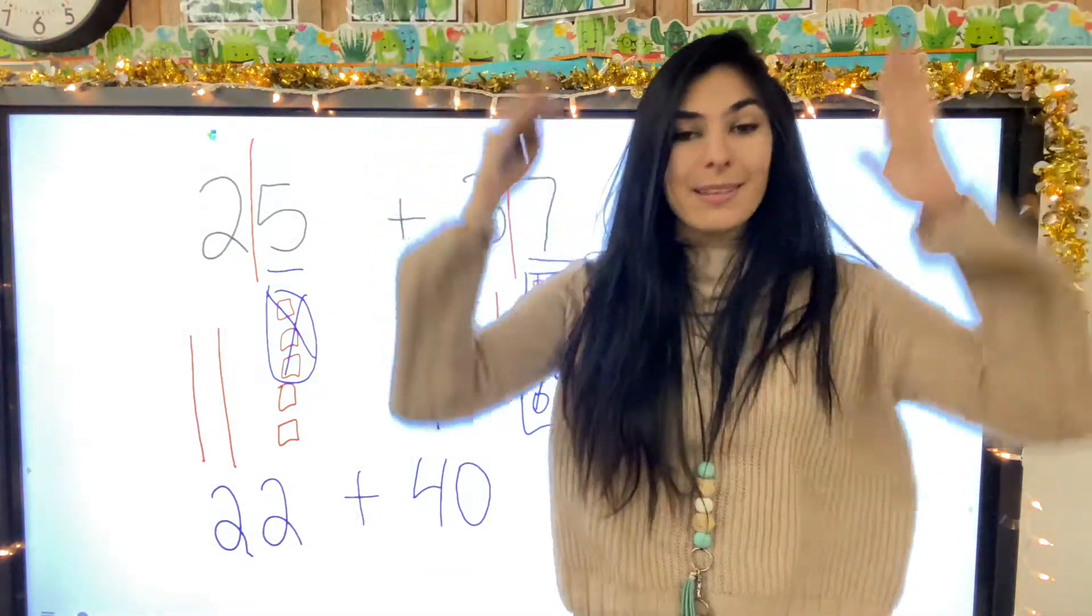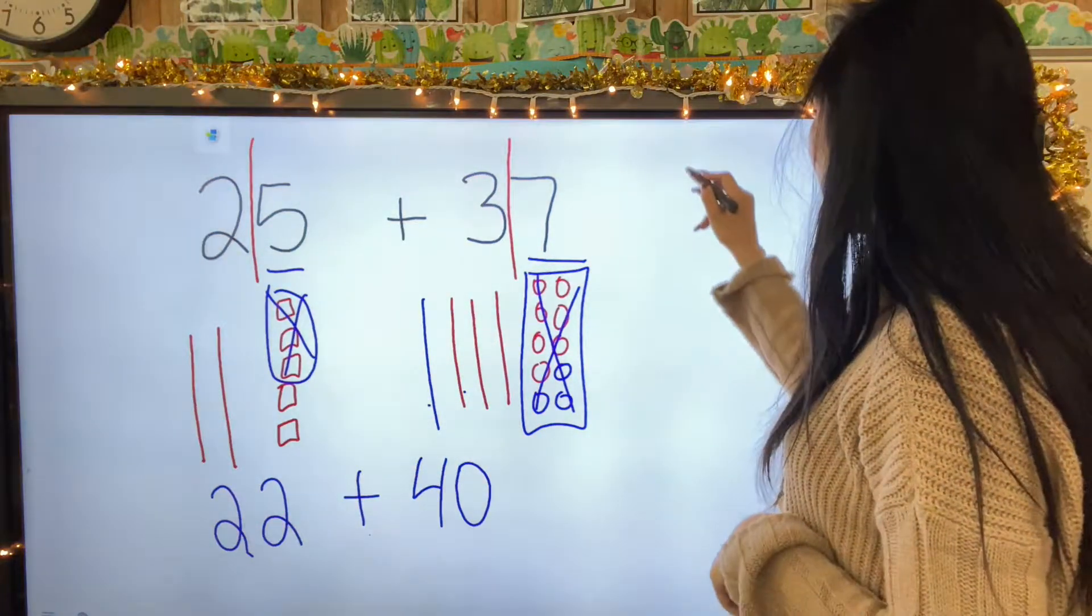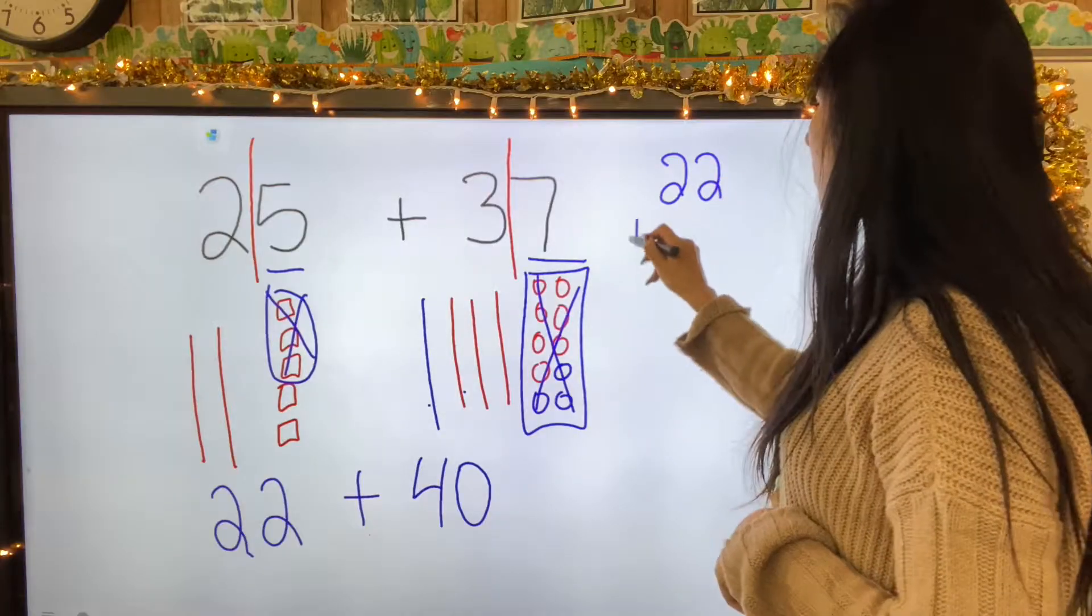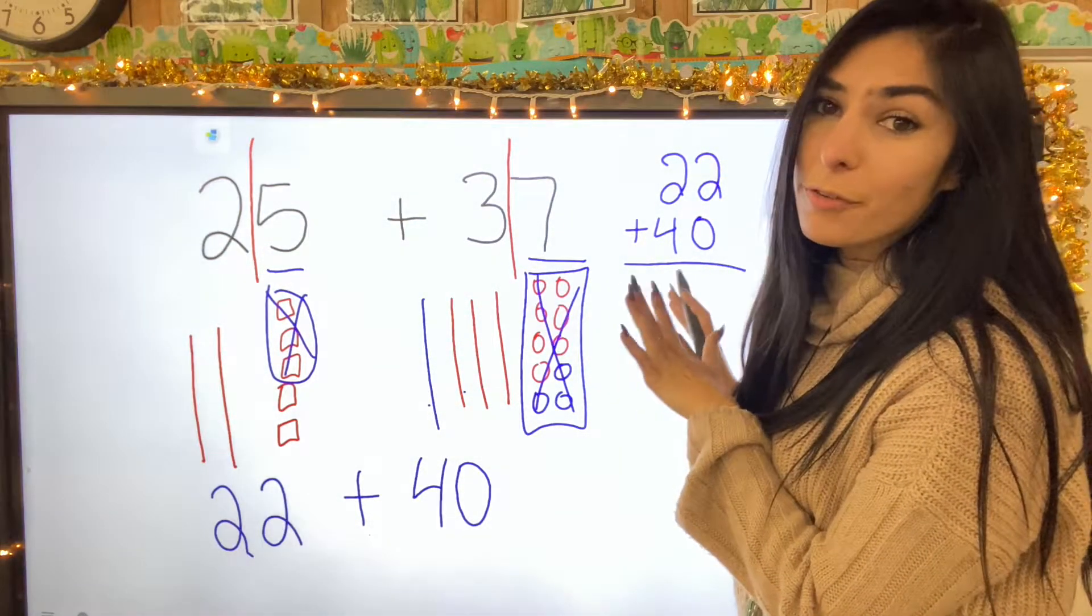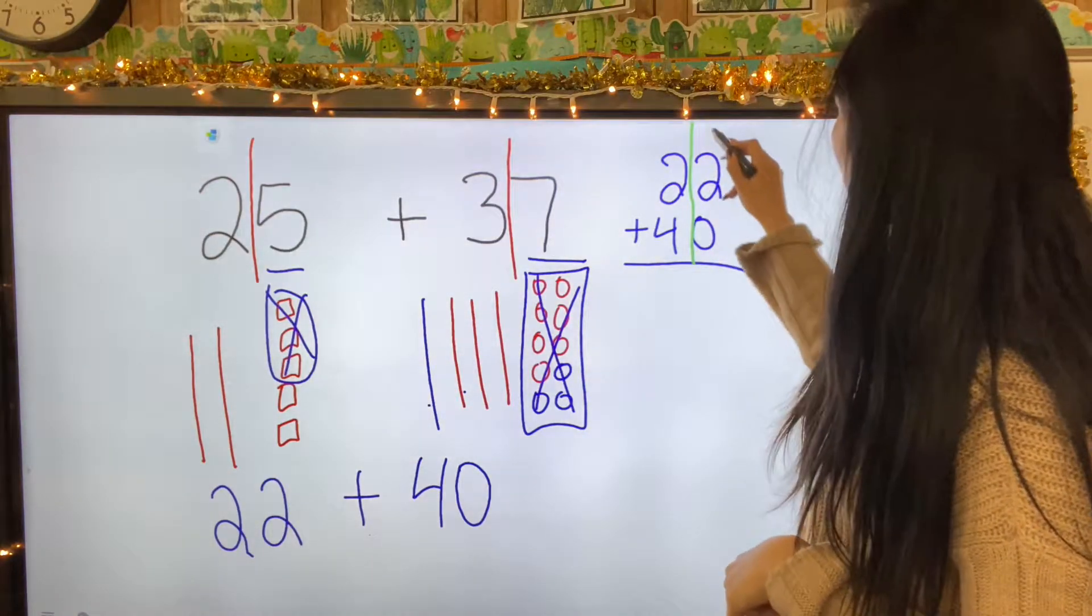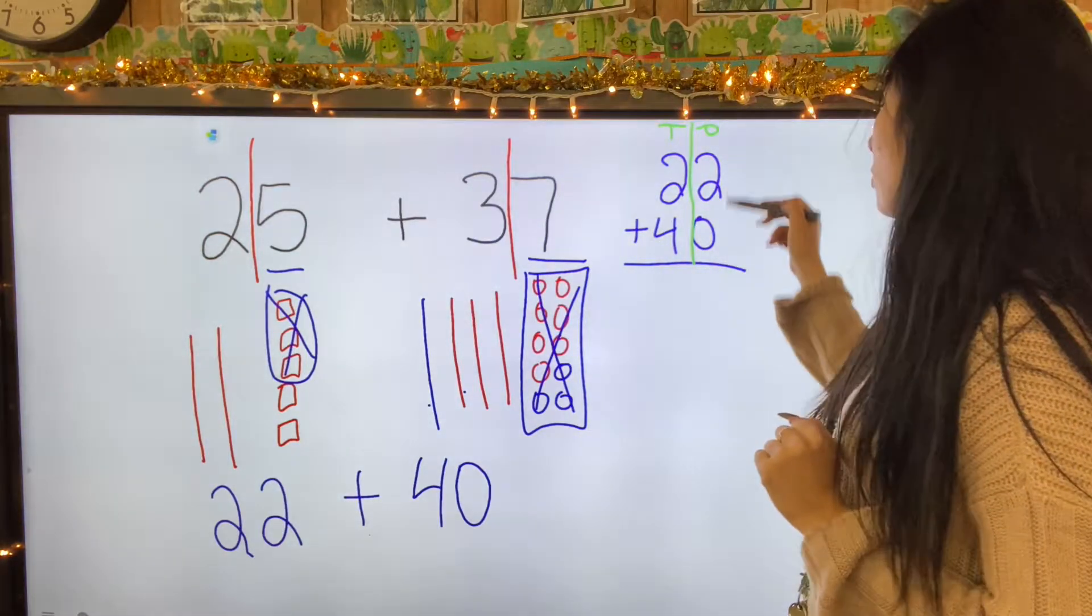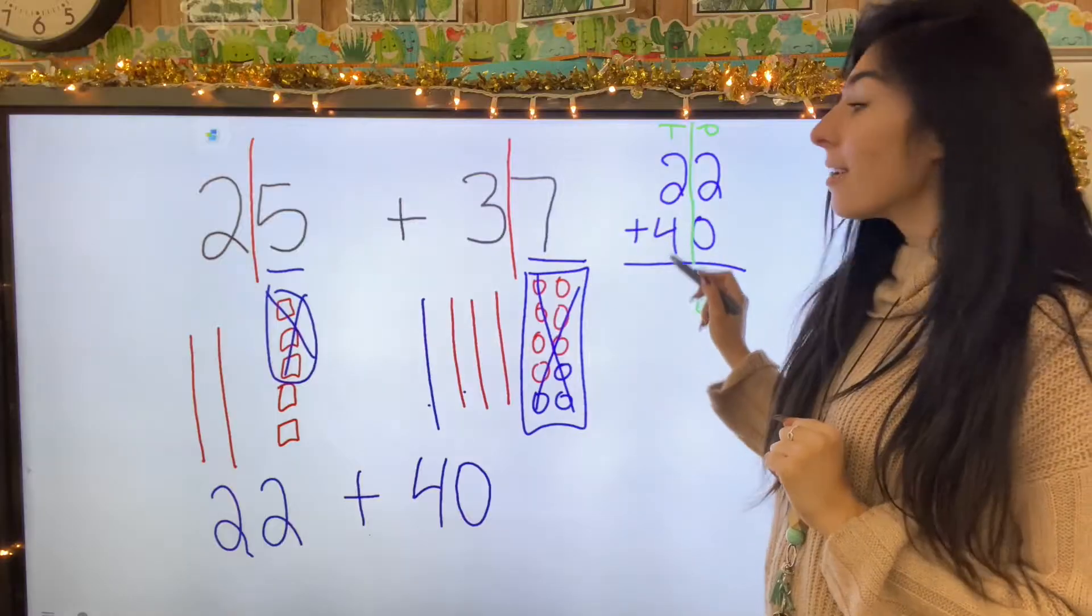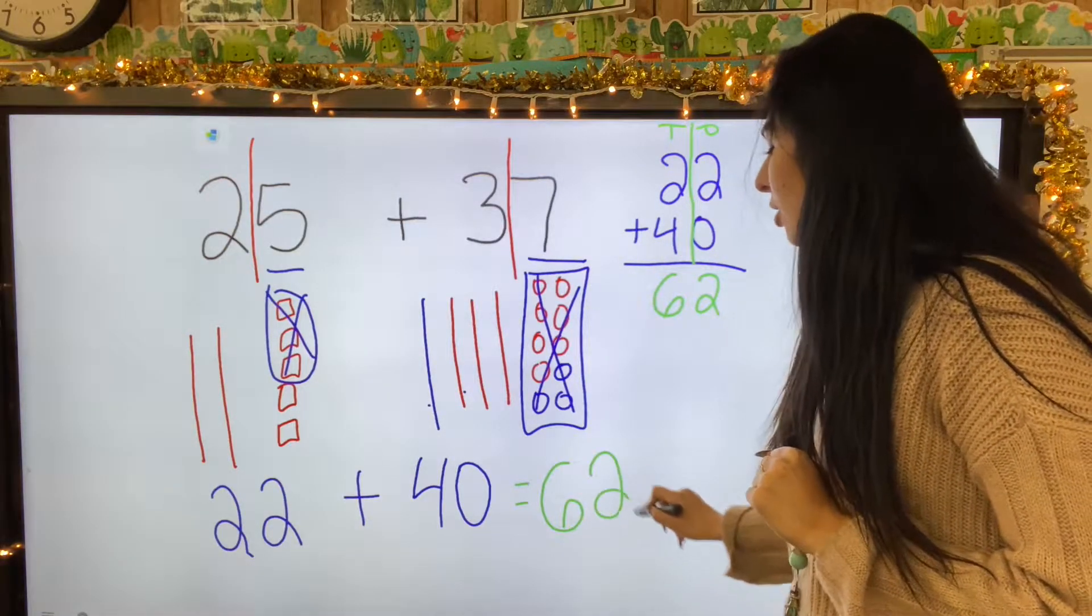I like to add things vertical because it's just easier for my brain. So I'm going to go ahead and come over here and make that vertical. So I have 22 plus 40. Anytime I'm adding vertical, the first thing I need to do is chop down the middle. We have our ones and tens. Always start with the ones. So we have two plus zero: two. Two plus four: six. So this equals sixty-two.